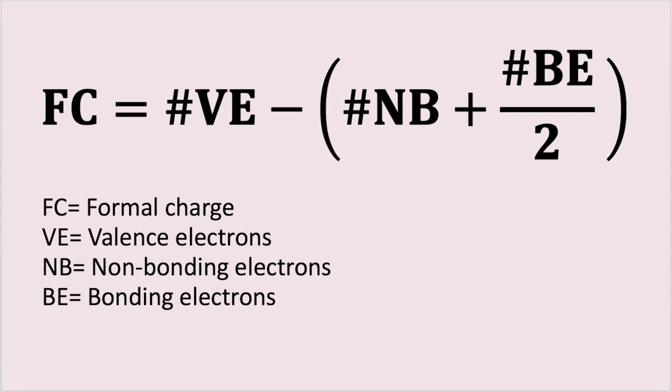To calculate formal charges of an atom, we use the following formula. Formal charge equals the number of valence electrons minus the number of non-bonding electrons plus bonding electrons divided by two. Remember, non-bonding electrons are the lone pairs that do not participate in the formation of a bond. Bonding electrons are the electrons participating in the formation of a bond. Each bond has two electrons.